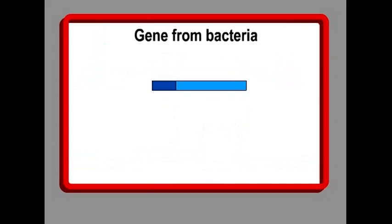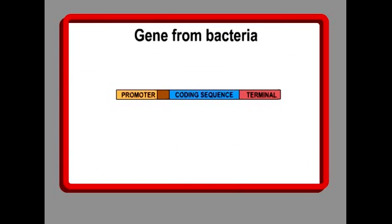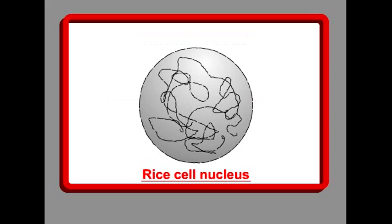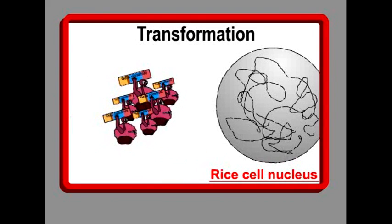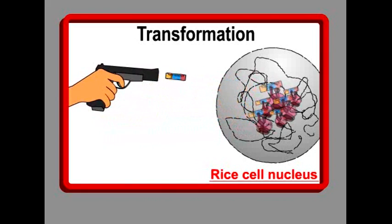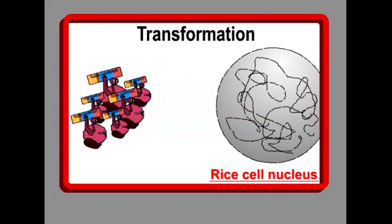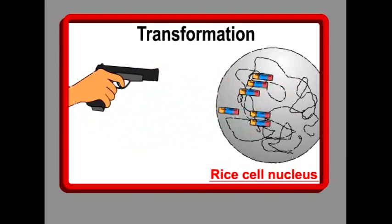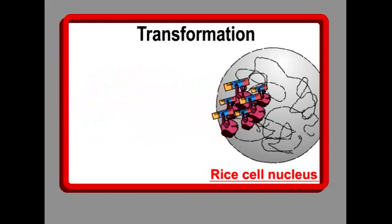Often, such genes are found in bacteria. We take out this gene in a laboratory and use its coding sequence to make a new gene construct, which can then be used in a plant. We then force this new gene construct into a rice plant cell nucleus — this process is called transformation. There are two ways to do this: we can use bacteria to carry the gene construct in, or shoot thousands of the new gene construct into the cell. Both processes can, and usually will, cause damage to the DNA of the cell. Also, we can never be sure exactly where the gene construct will land on the long strings of DNA.